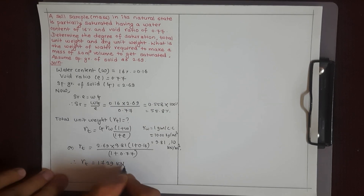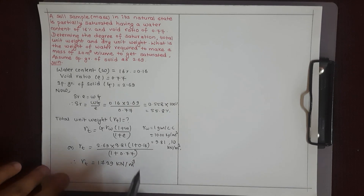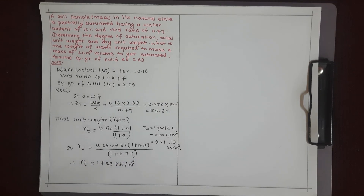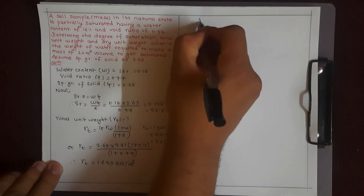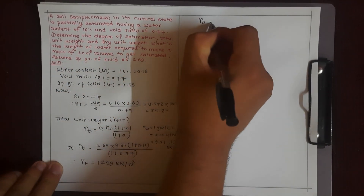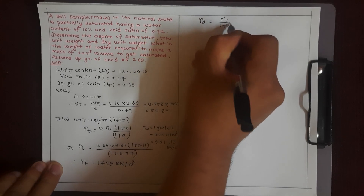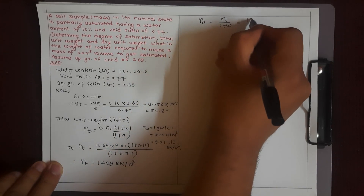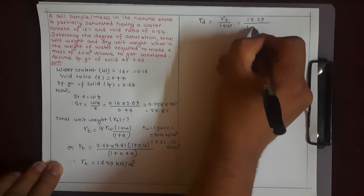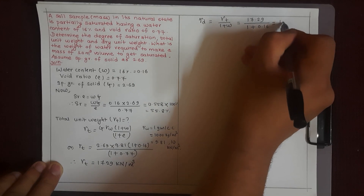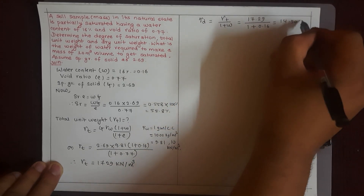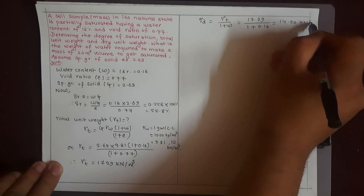Now for the dry unit weight: gamma d = gamma t / (1 + w) = 17.29 / (1 + 0.16) = 17.29 / 1.16 = 14.90 kN/m³.